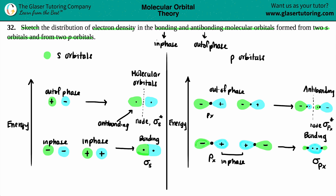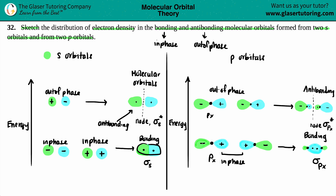So to summarize: wherever there's a node, there's no electron density - the probability of finding an electron is zero. Wherever you drew your colored regions, that's where electron density is high. We covered bonding and antibonding for both s orbitals and p orbitals coming together. I hope this helped - subscribe to the channel, and check out the math and physics videos as well.